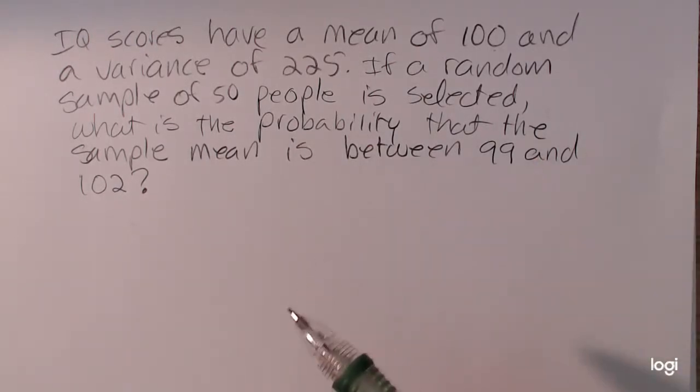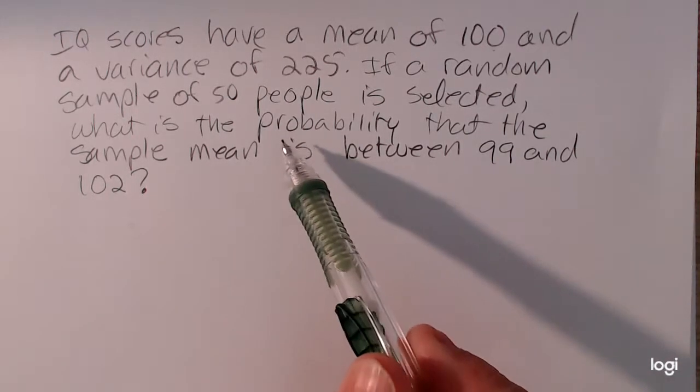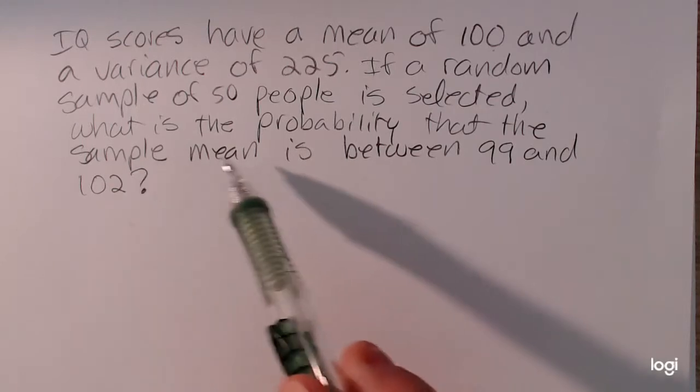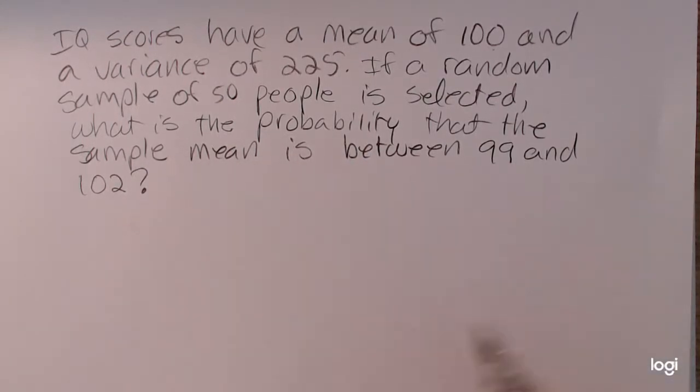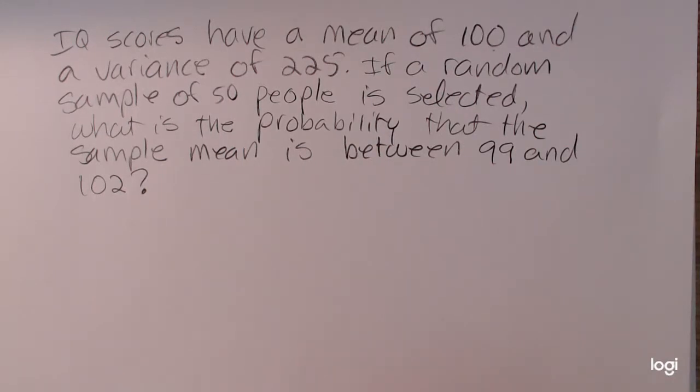So the clue that I'm using the central limit theorem is this part here. It says the probability the sample mean. So I want a probability corresponding to a sample mean, not an individual IQ score.